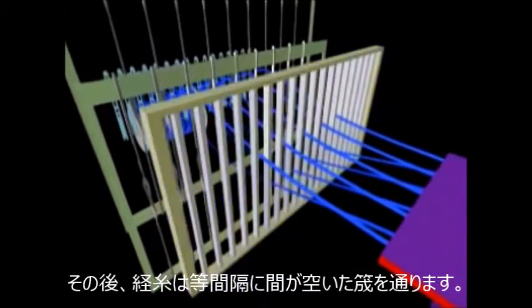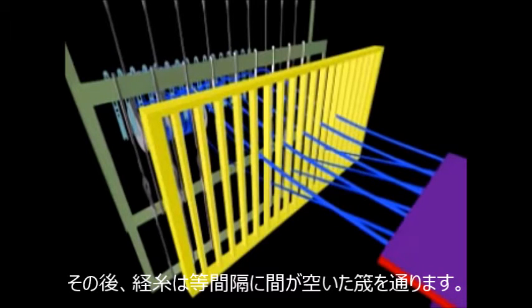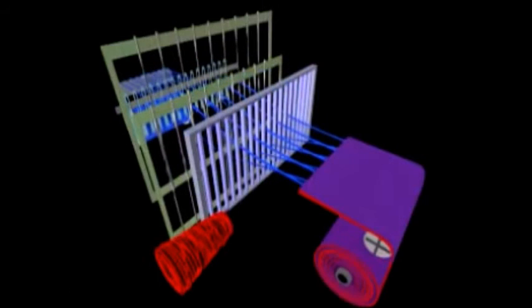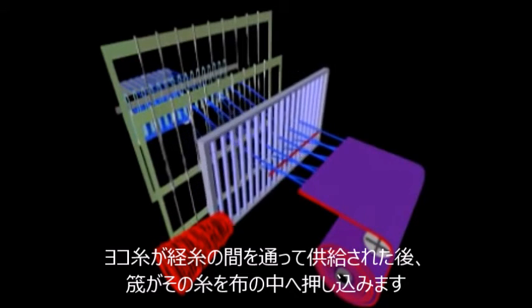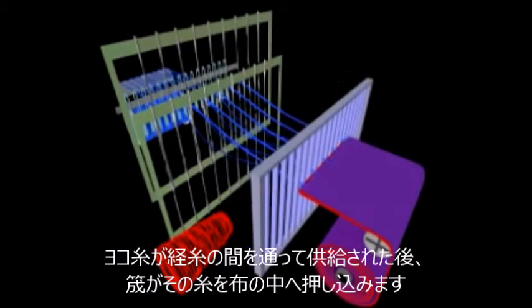After leaving the harness, the warp yarns are evenly spread and spaced by a reed. After a filling yarn is inserted at a right angle to the warp, the reed is used to force the filling yarn into the fabric.